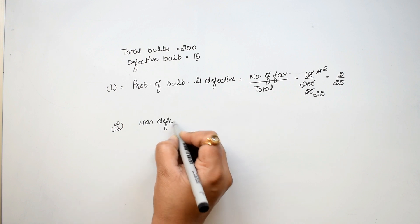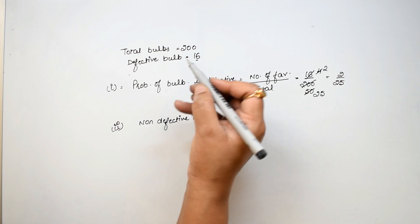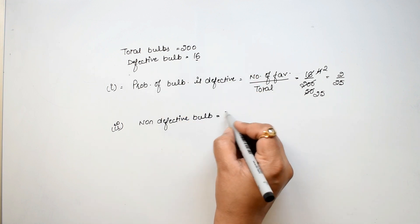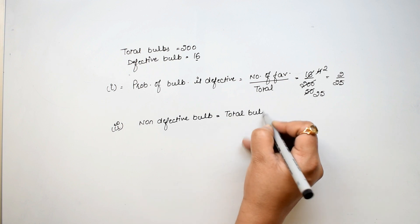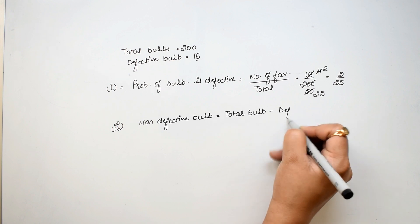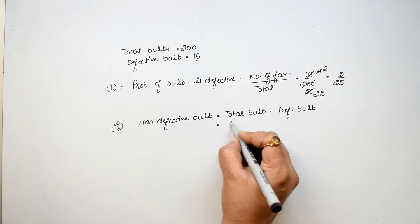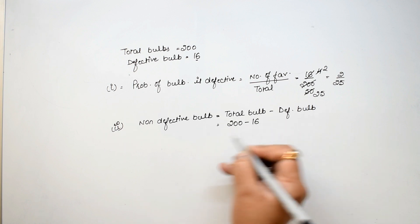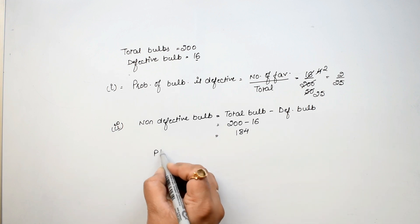We will remove the total bulbs. If I have defective minus, then my non-defective bulbs are total bulb minus defective bulbs. 200 was total and 16 was defective. From 10, 6 is removed, 4. And 9, 8, and 1. 184 is our non-defective bulbs.